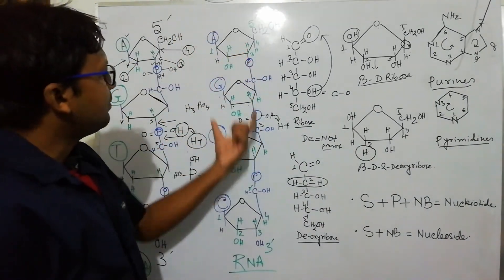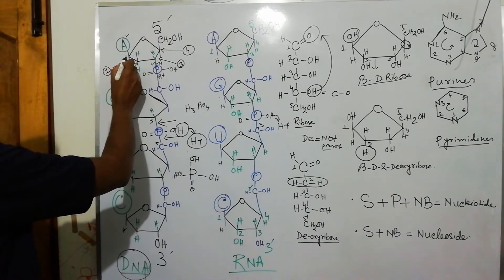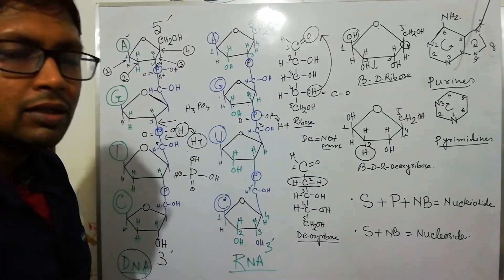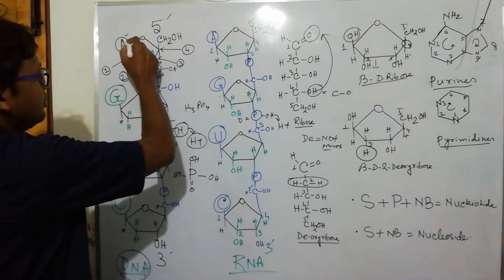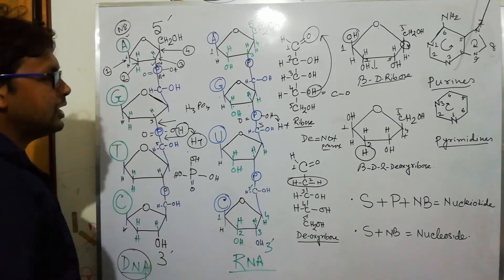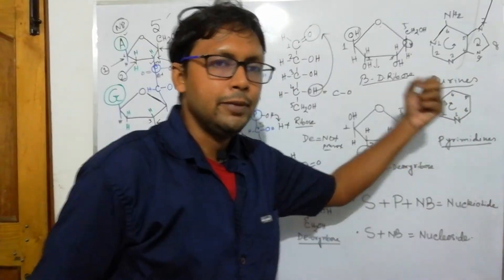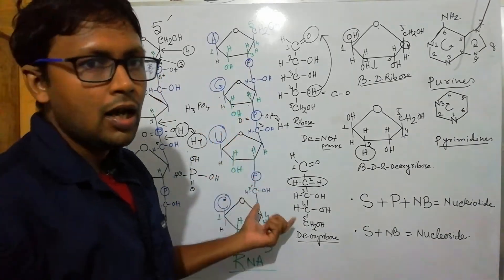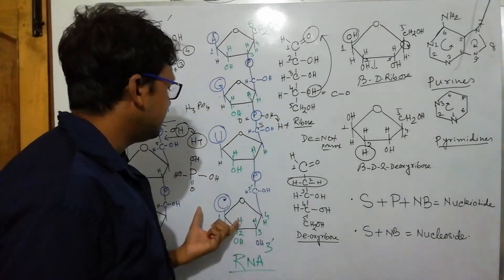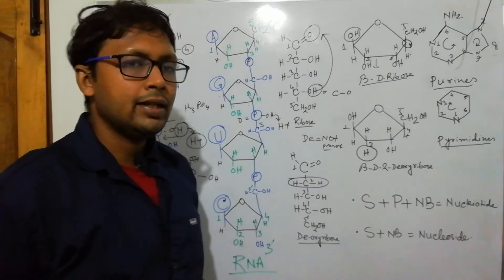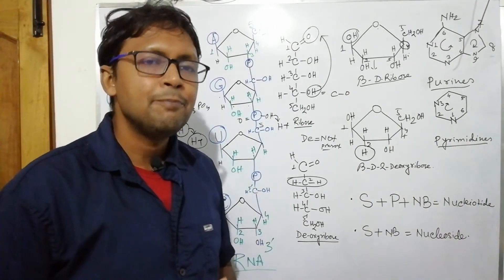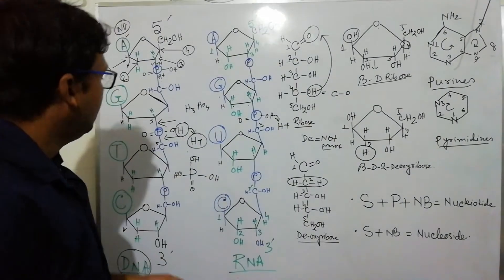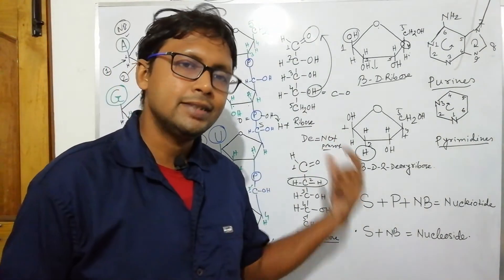In the DNA and RNA structure, the first carbon of the sugar has an OH group involved in forming a glycosidic linkage with the nitrogenous base. The nitrogenous bases are adenine, guanine, thymine, and cytosine. Adenine and guanine are purines; thymine and cytosine are pyrimidines in DNA. In RNA, uracil replaces thymine, so the pyrimidines are uracil and cytosine.